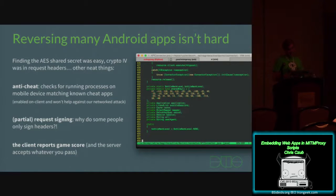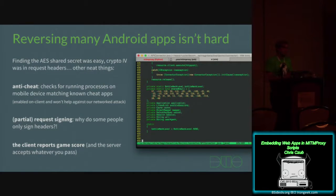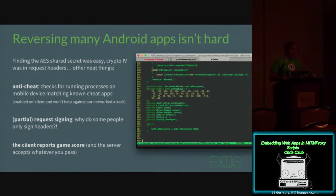They also had partial request signing — the headers had a signature, but it only extended to parameters within the headers. It didn't take into account any of the request body. So for my cheating work, I didn't even have to re-sign anything. And the client reports your game score and the server will just accept it — it doesn't even bother verifying the score makes sense. You could say you got a million points without playing any words, and it's totally fine with it.